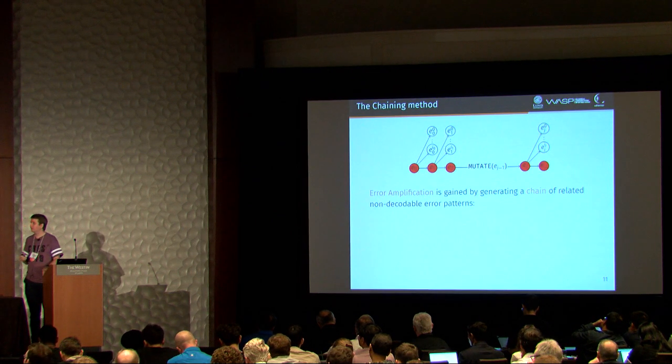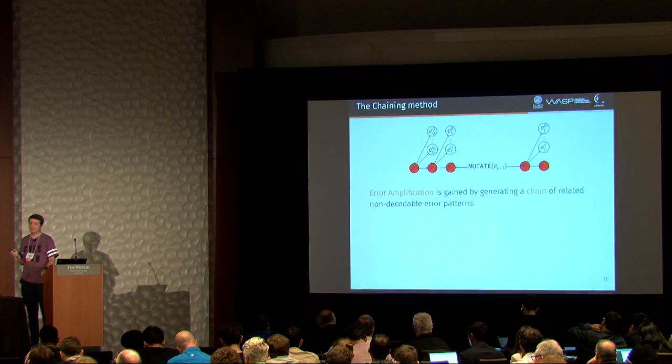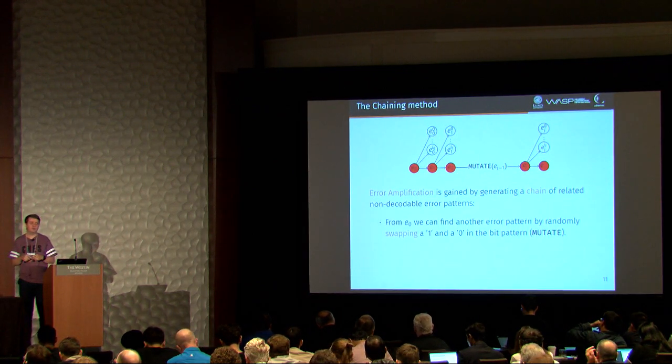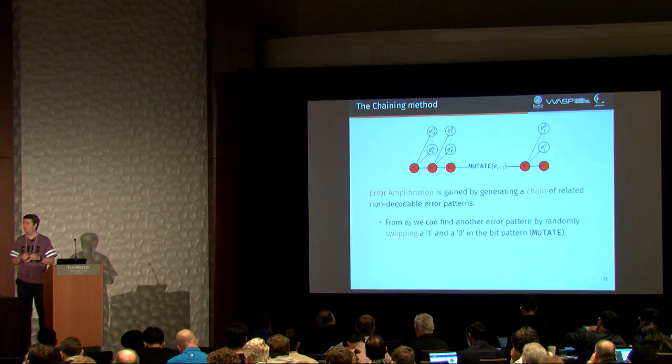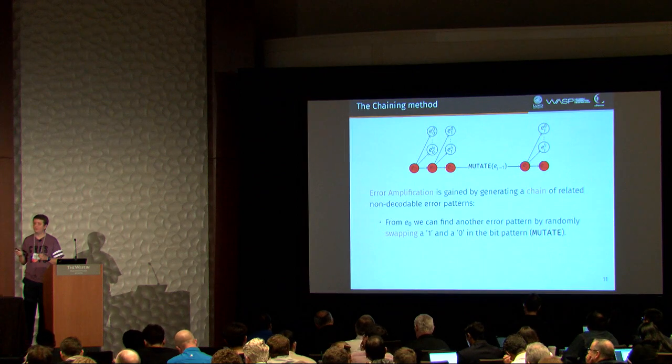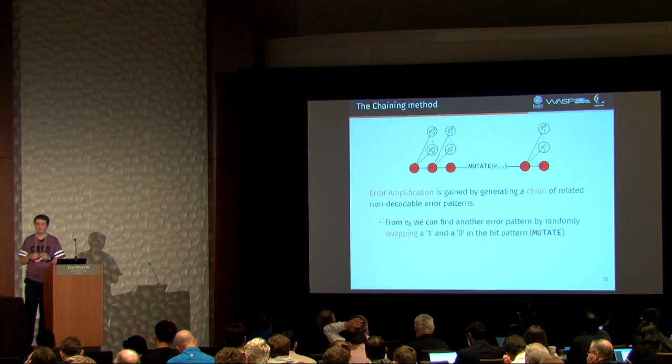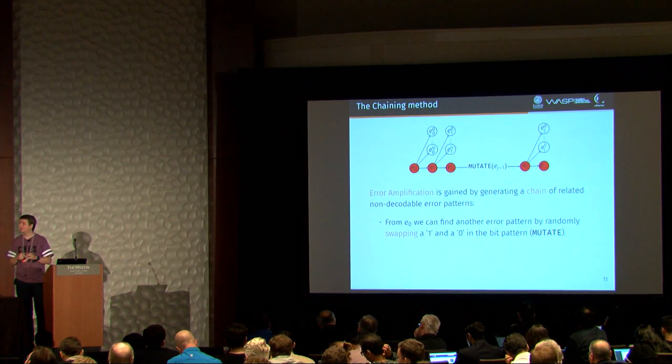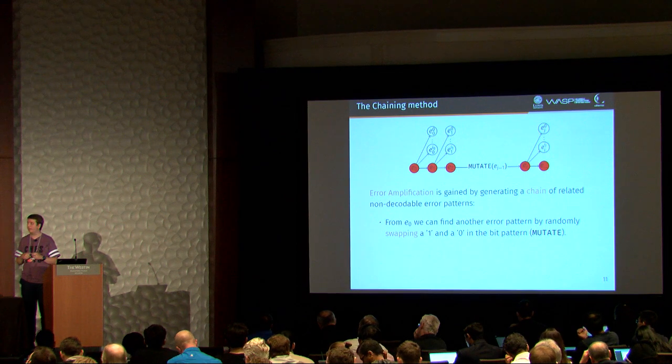All right. So the chaining method works like this, where error amplification is gained by generating a chain of non-decodable error vectors. And we basically take an initial error pattern, and we mutate it by moving randomly one of the non-zeros. And then we try to decrypt again. If we manage to decrypt, we indicate this with white circles. And if we don't manage to decrypt, or the victim fails to decrypt, we indicate this with red circles. And we use that as a new basis, and we get the chain.